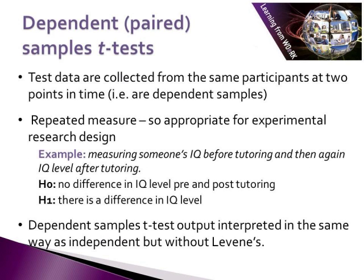We now have another type of t-test called the dependent or paired sample t-test. The dependent sample t-test is used where test data are collected from the same participants at two points in time, so they are dependent samples. In the previous example we were looking at independent samples — collected from different people, so not dependent on each other. Sometimes, however, we collect survey data in a longitudinal survey, going back and talking to the same people at a different point in time. In order to test data in that kind of example, we use the dependent sample t-test, because if I surveyed you and then did the same survey again, the two samples would be dependent on each other.